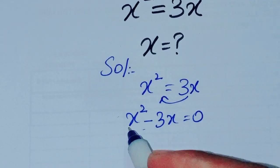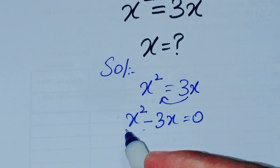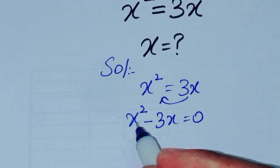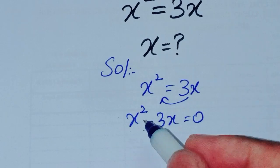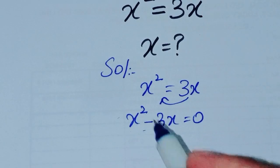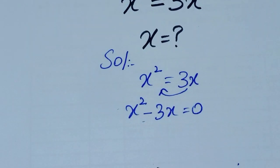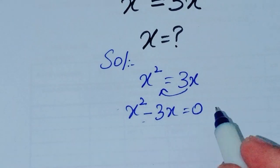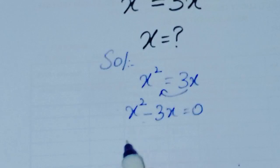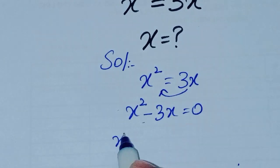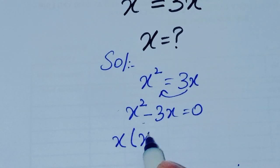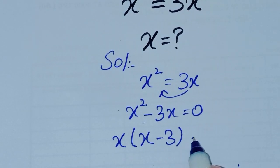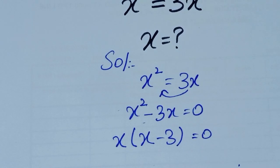There are 2 values because the power of x is 2. We take x as a common factor: x(x minus 3) is equal to 0.